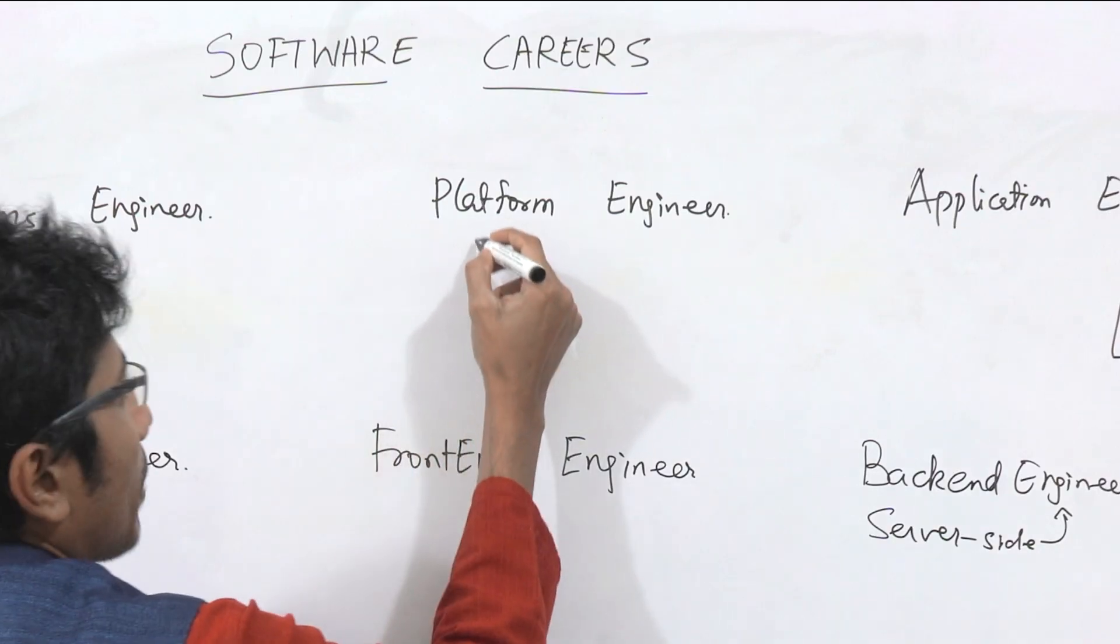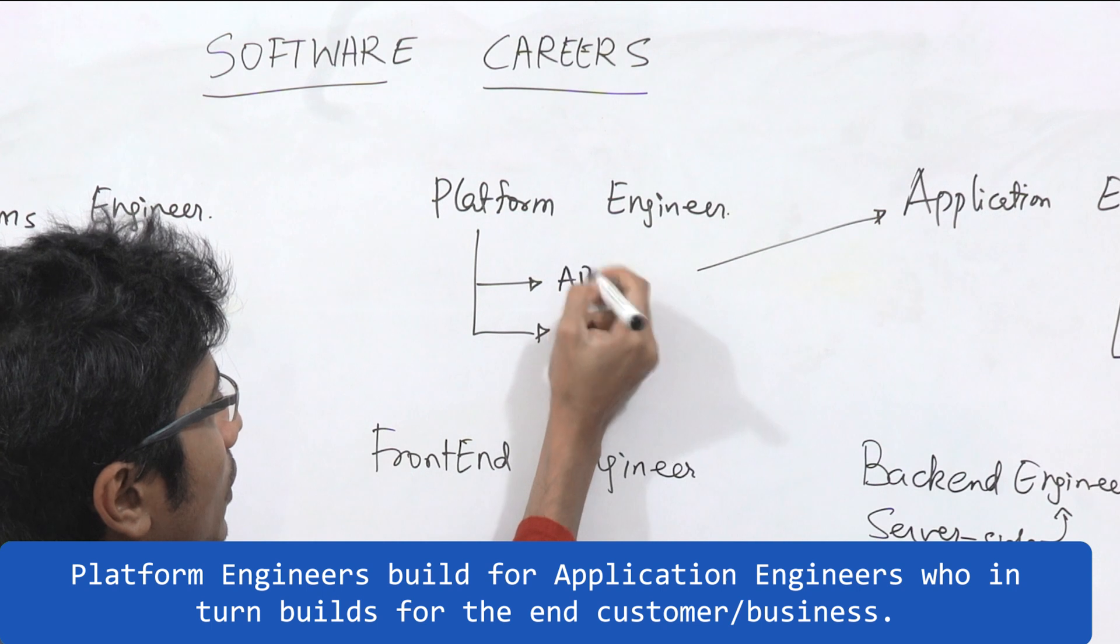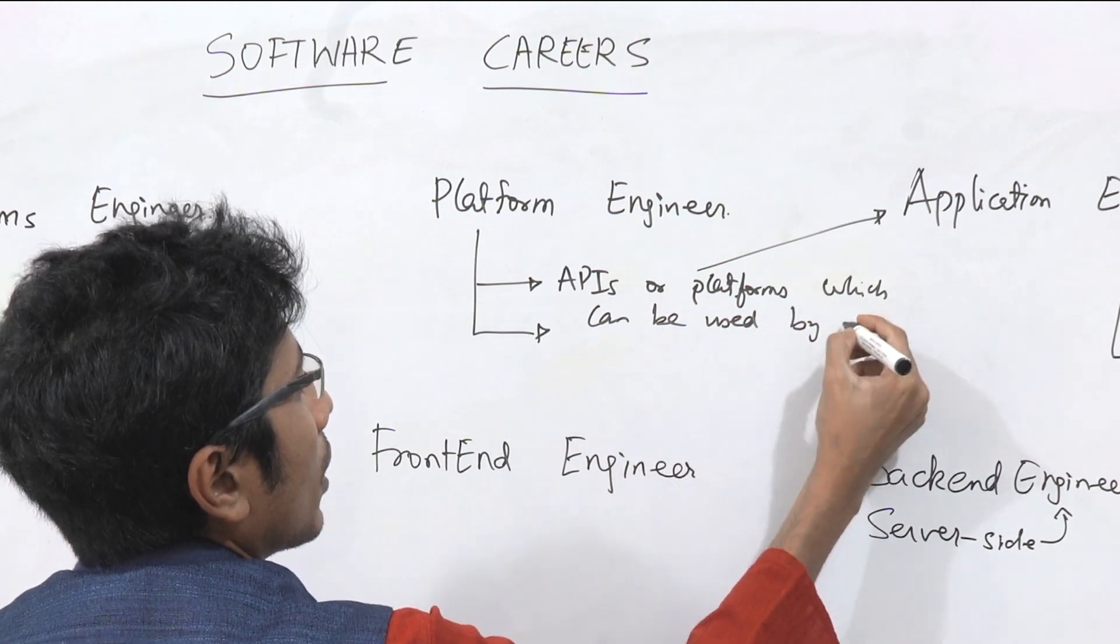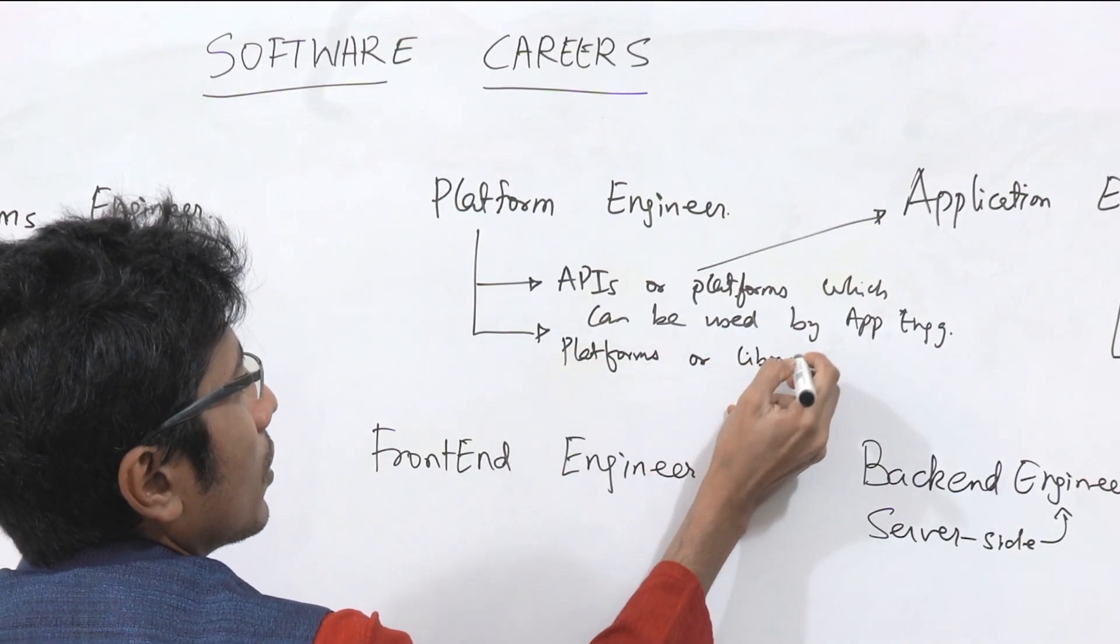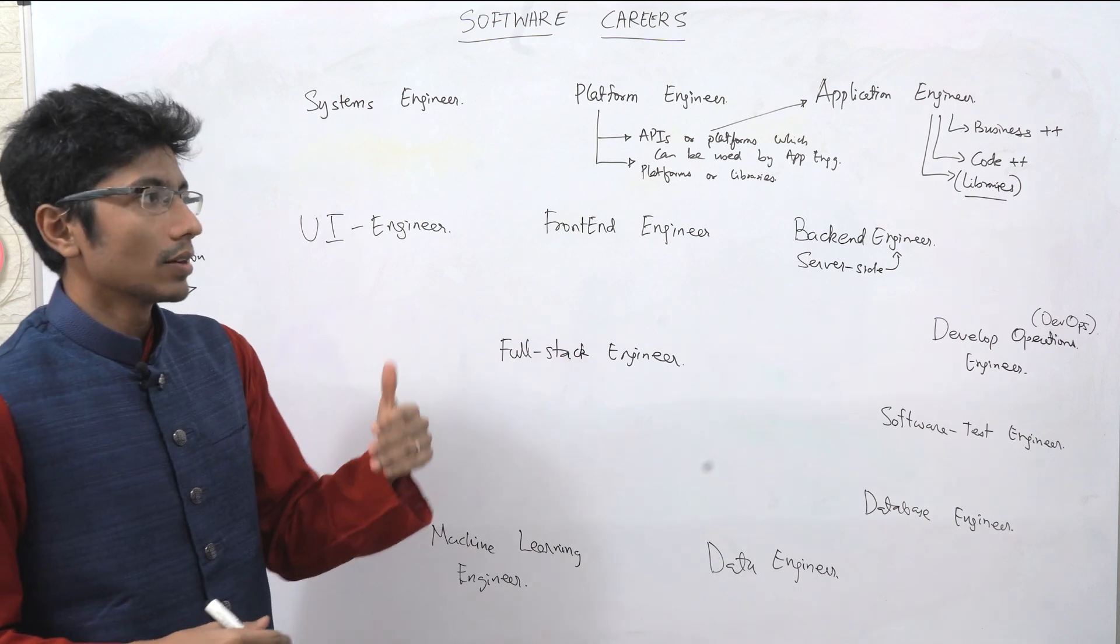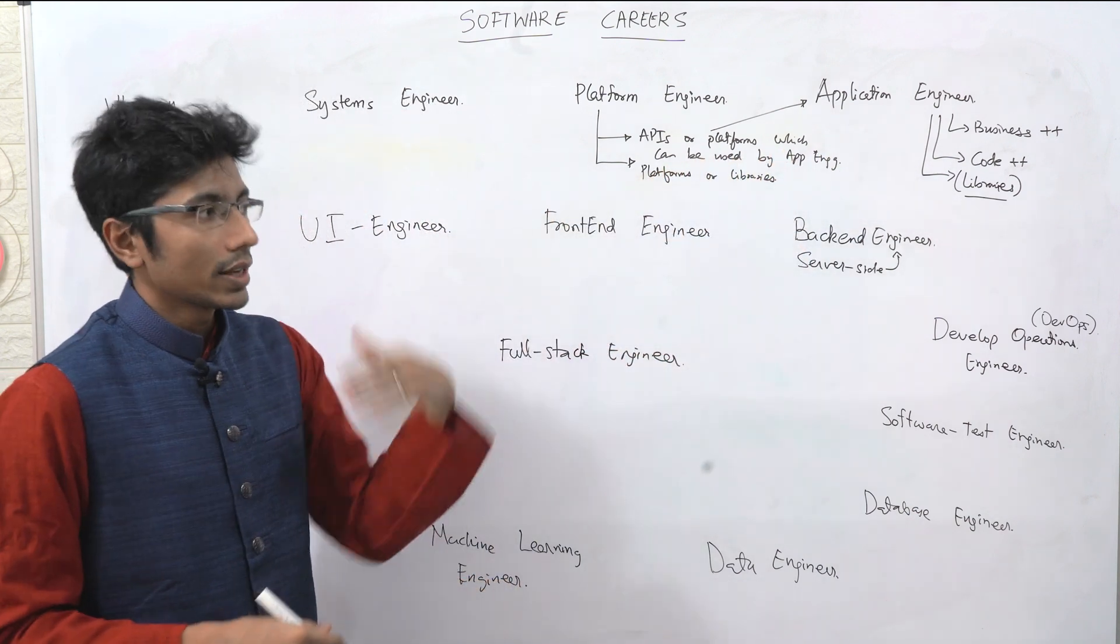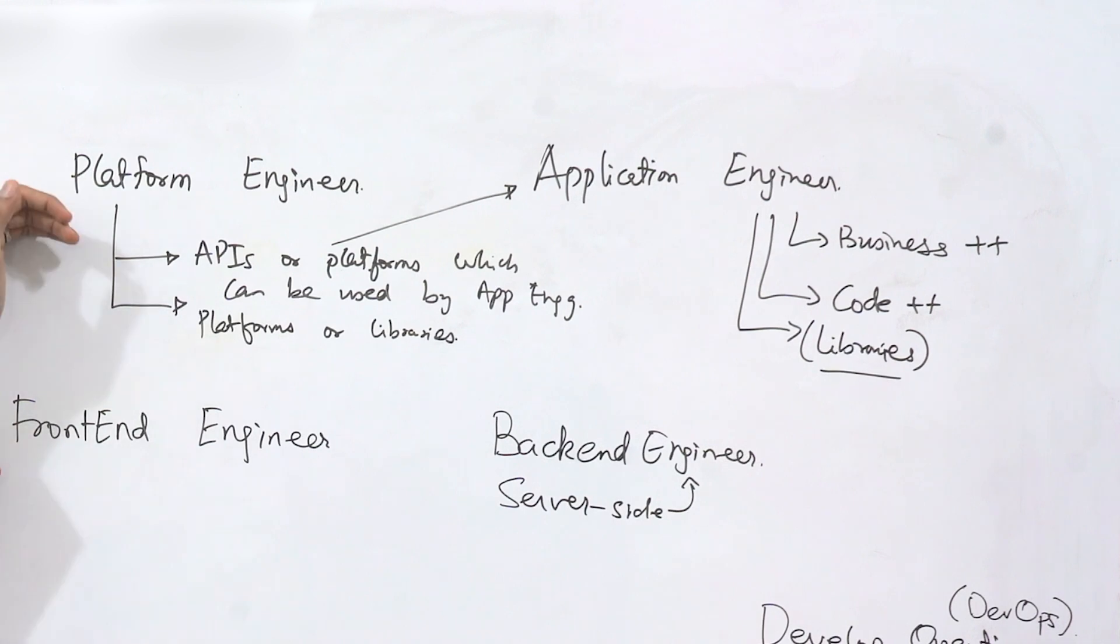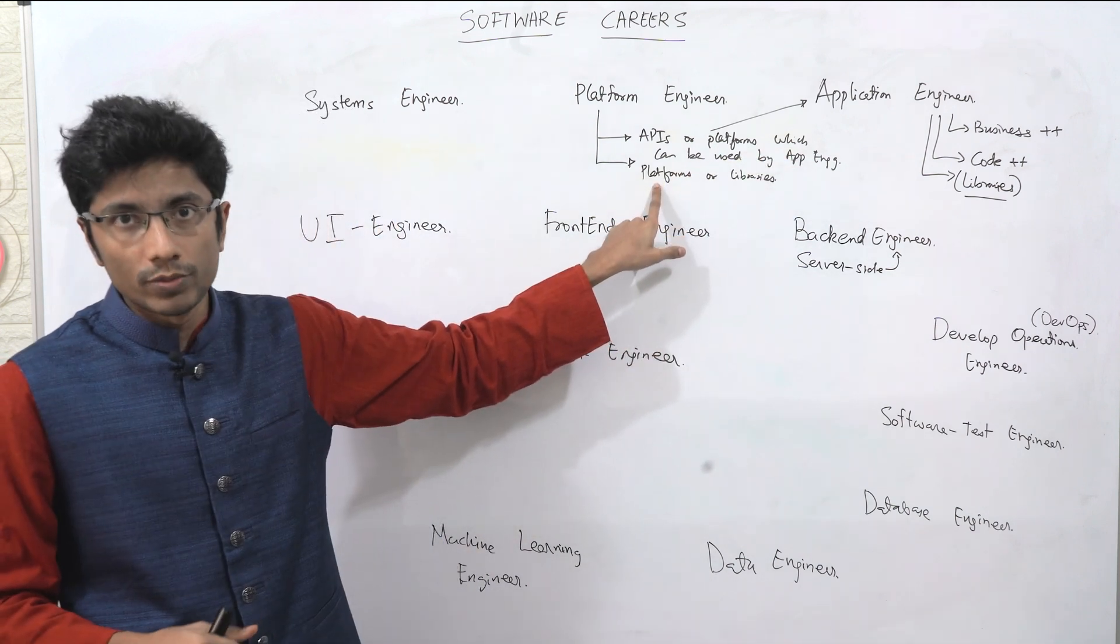When you look at a platform engineer, their customers happen to be application engineers, so they expose APIs or platforms which can be used by other app engineers. Application engineers therefore write platforms or libraries. A library is basically pieces of code which you can reuse. Platforms are basically a set of APIs which are being exposed by the platform engineer, connecting to databases, connecting to different systems.